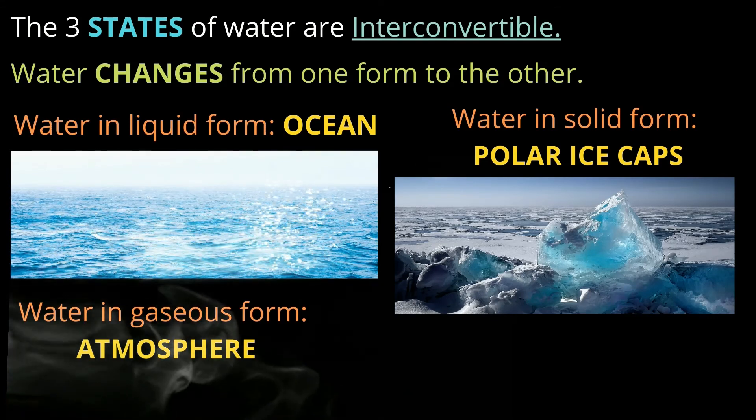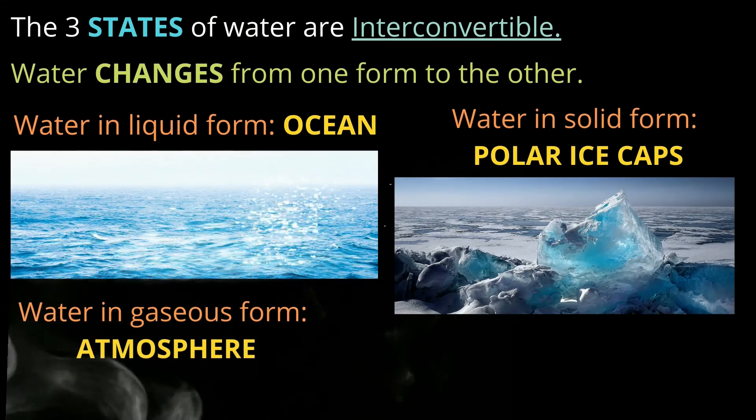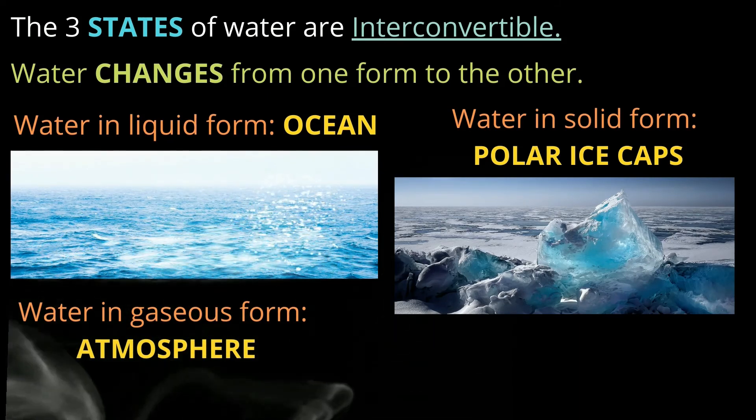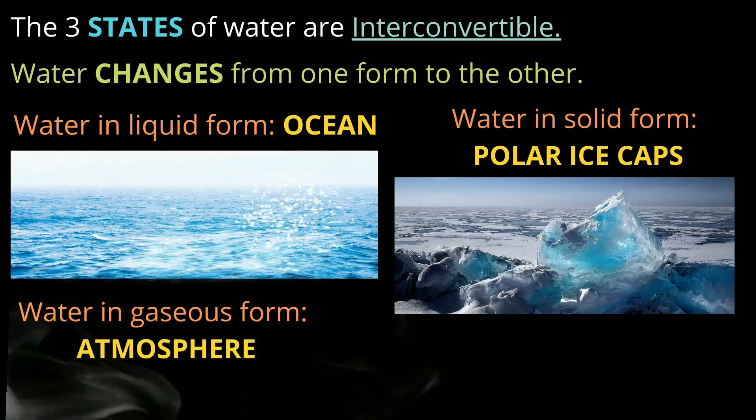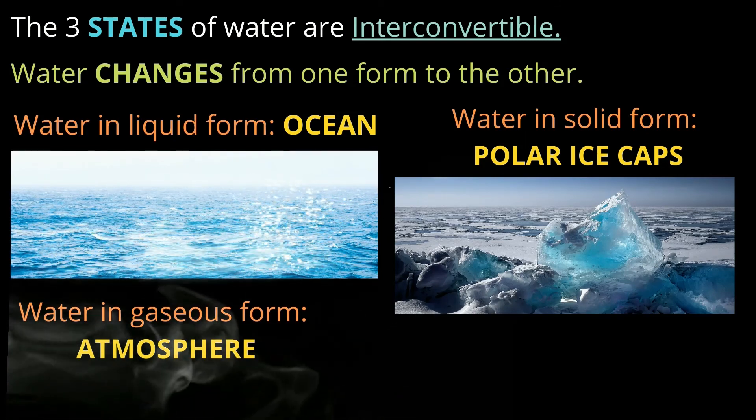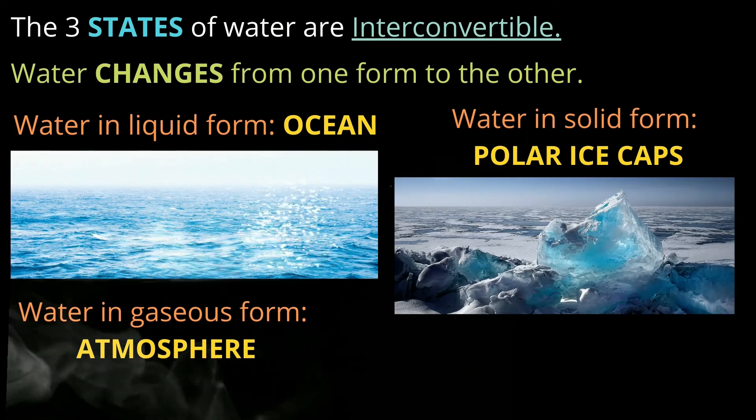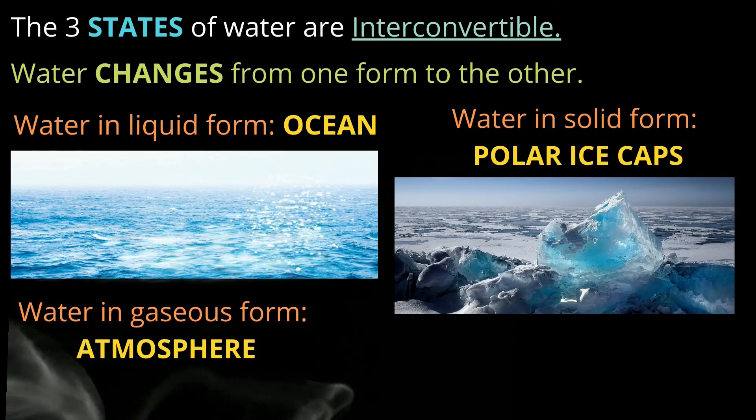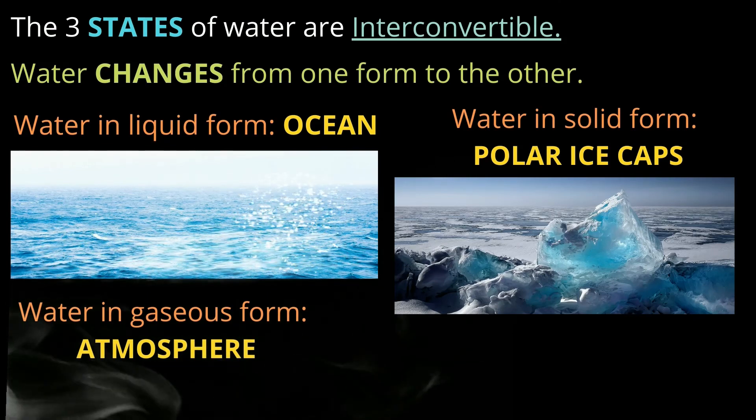Where do we find water in liquid form on Earth? We find it in the ocean. Can you see the water moving? That is water in its liquid form. Where do we find water in solid form on Earth? It's found in the polar ice caps. Can you see the huge ice cap in the picture? What about water in gaseous form? It's found in the atmosphere.